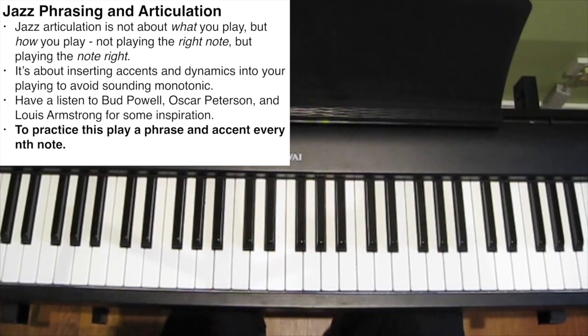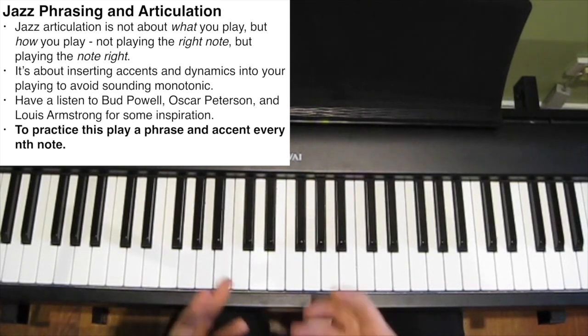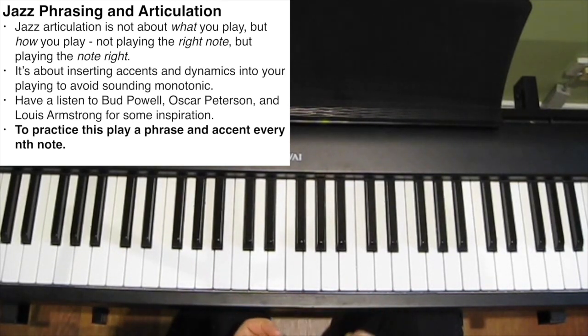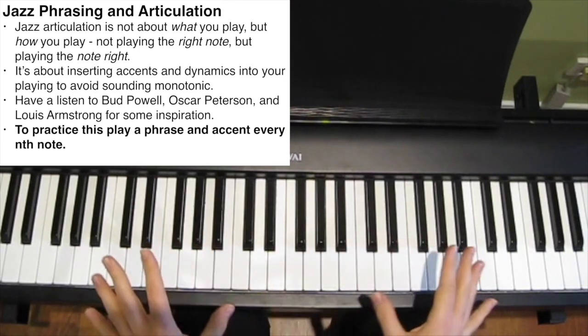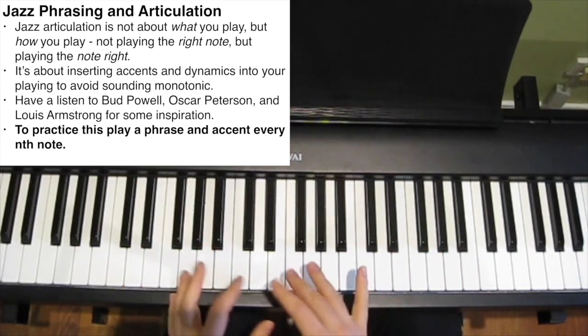Now, ultimately, the only way to truly develop good articulation is by listening to a lot of Jazz and then trying to mimic and mirror the soloist's lines. Listening to people like Bud Powell, Oscar Peterson, and Louis Armstrong, all of which had really idiosyncratic and strong articulation, can give you ideas about how you should go about playing your own melody lines and how you should articulate your own improvisation.